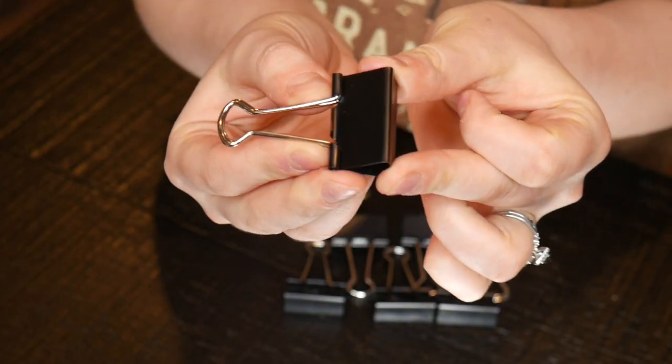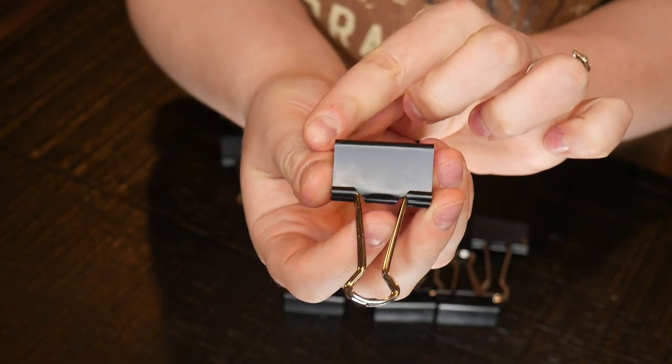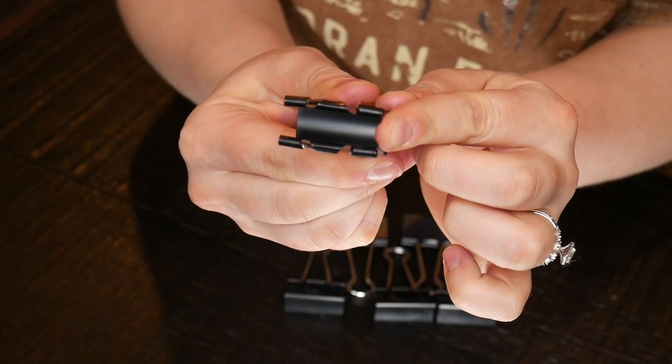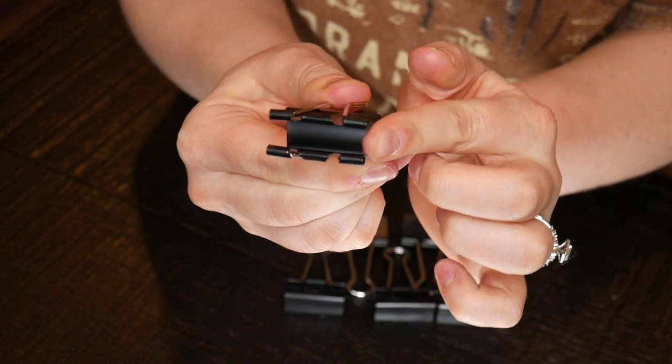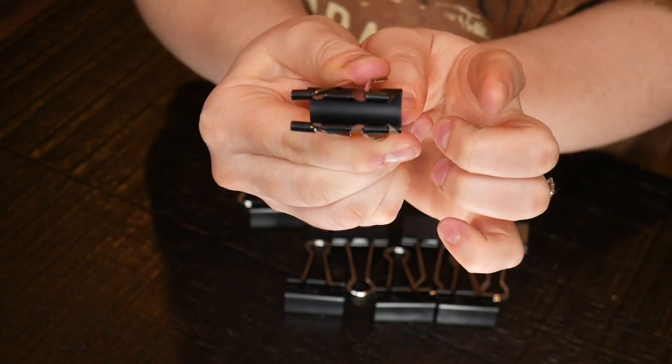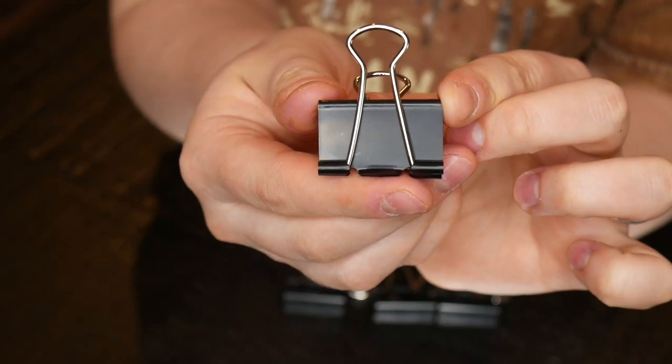These are the medium size binder clips which do measure 1.25 inches wide. These also open to 0.61 inches, which can help keep your large stacks of paper securely fastened together. These also are made out of a durable tempered steel for an extra strong grip.